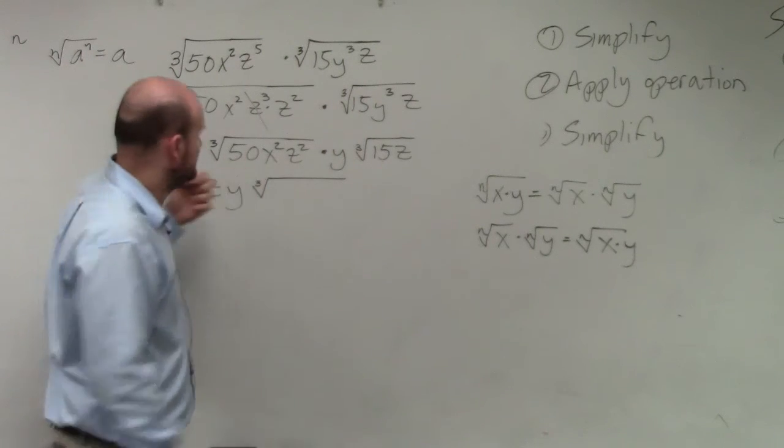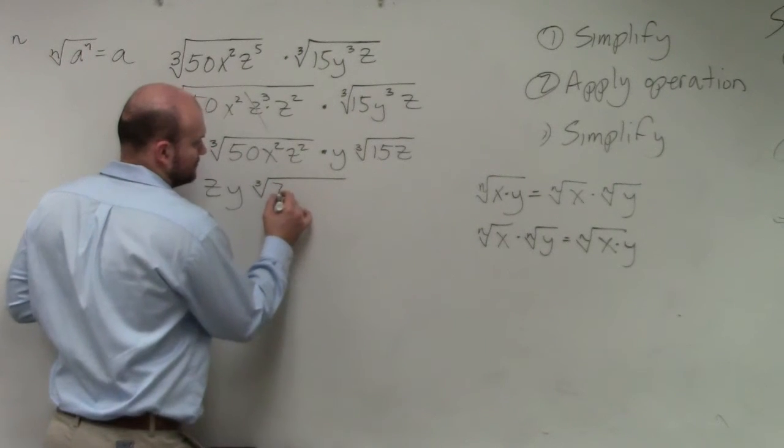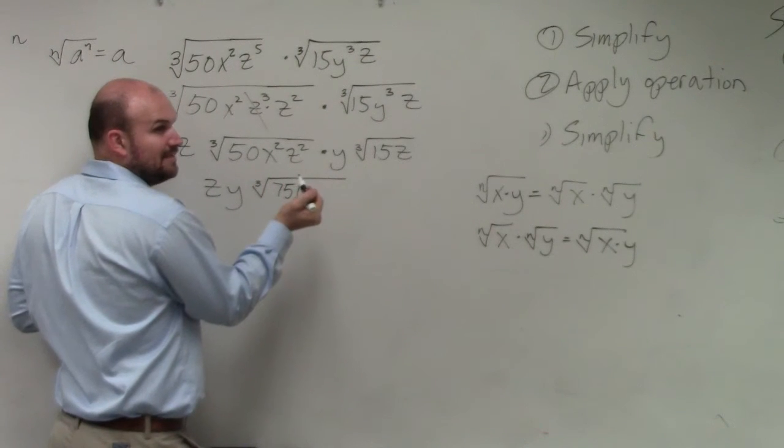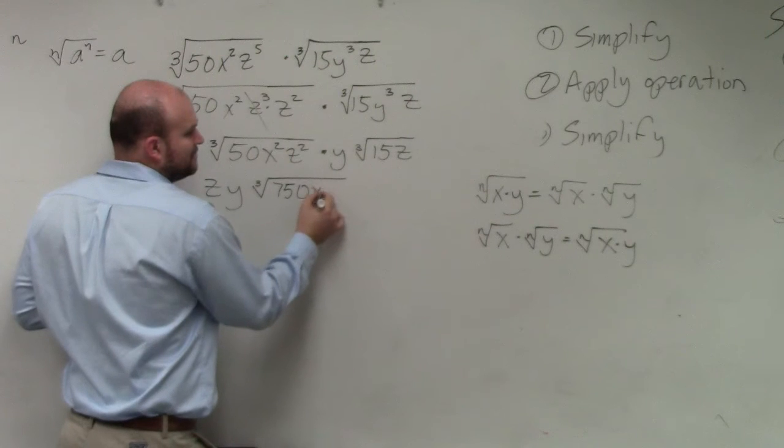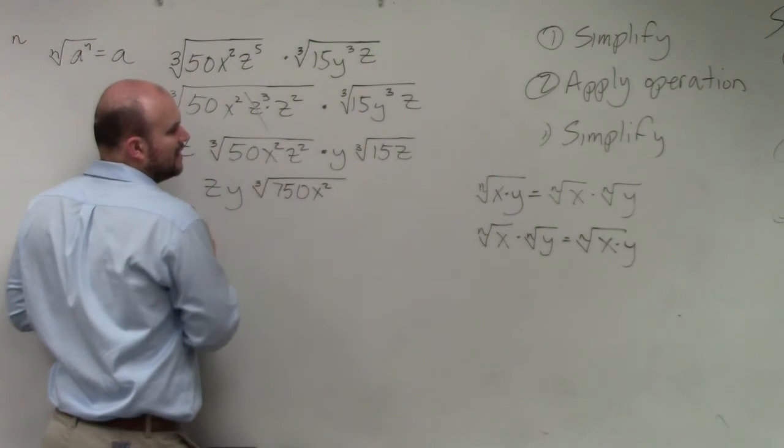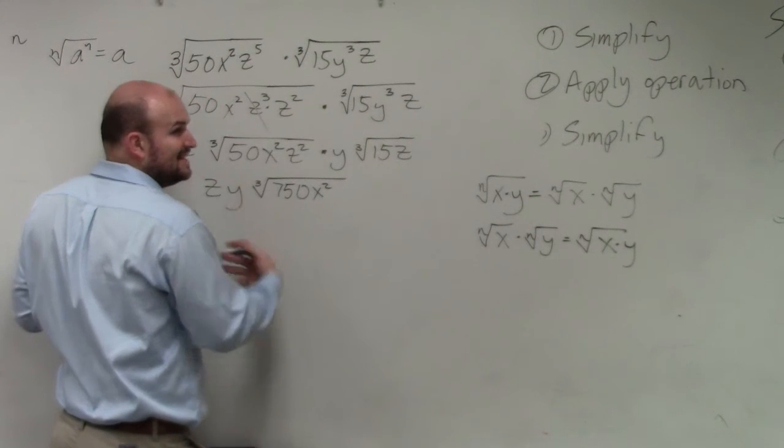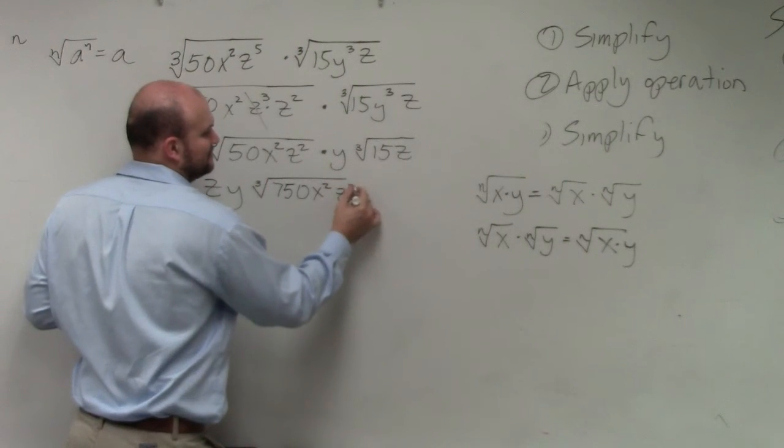Then, x squared, I don't have anything to multiply x squared by, do I? No. So that becomes x squared. And then I have z squared times z, which is z cubed.